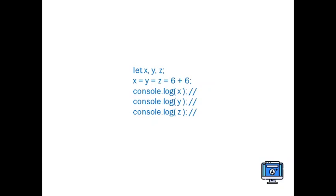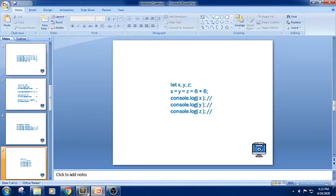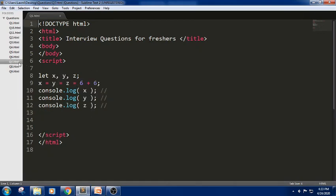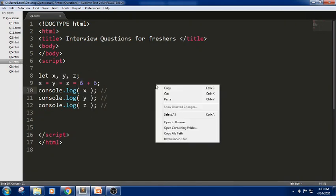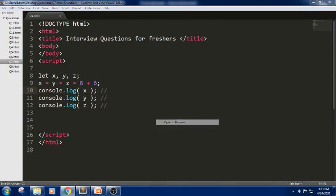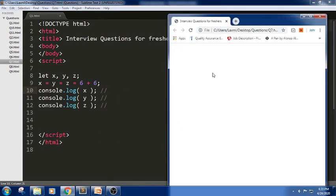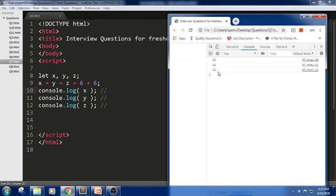Let us check the output of this snippet in the editor. So this is how we have the code open in the browser. Let me check the output here: 12, 12, and 12. Thank you.